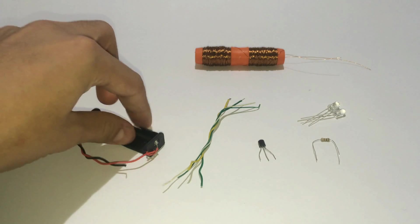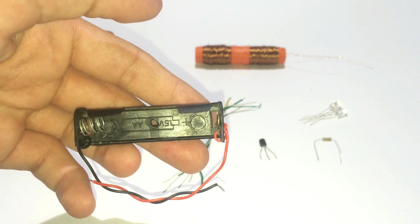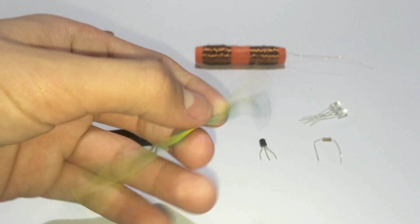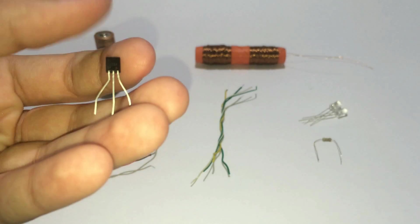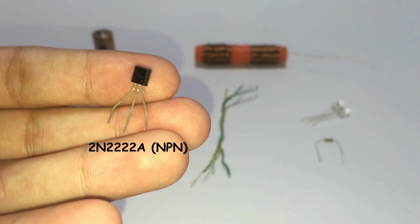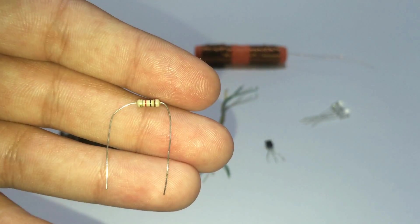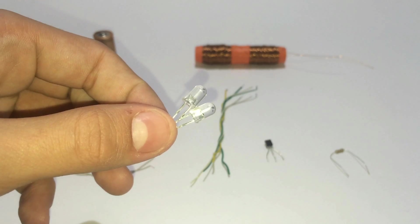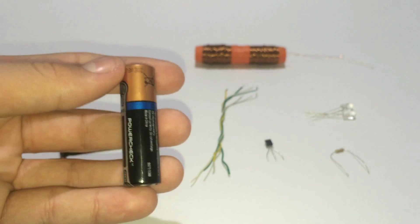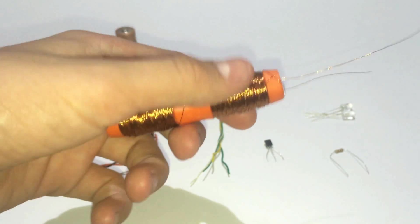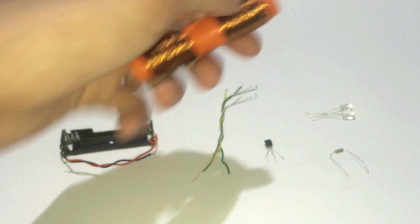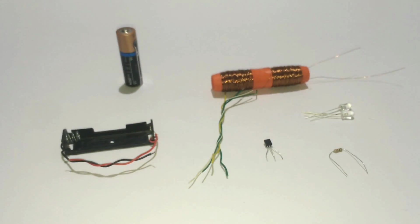The components are: 1.5 volt battery holder, some wires, NPN transistor with the code written under it, also 1K ohm resistor, some LEDs, 1.5 volt or double-A battery, copper insulated wire, and that's it.